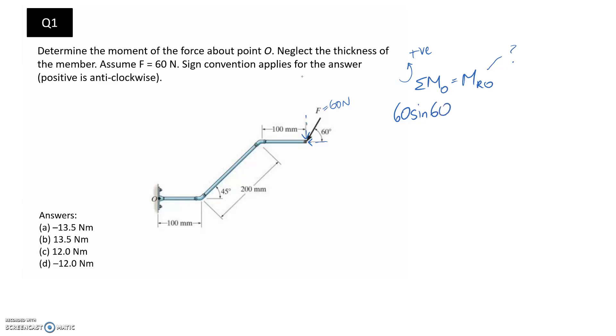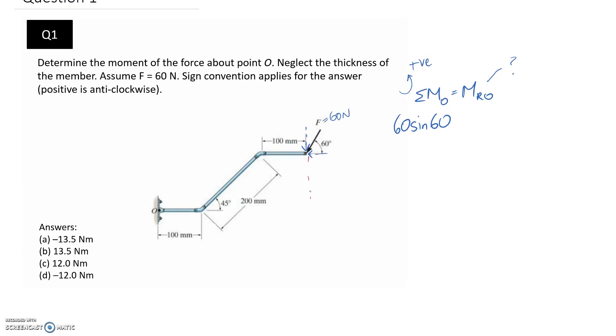So it's going to be 60 sin 60 for this vertical part, and then we need to multiply it by its line of action, sorry, the distance from its line of action, which is this, all the way back to point O. So we want this full distance in here. So it's going to be 100 plus 100 plus we need the extra horizontal part in here.